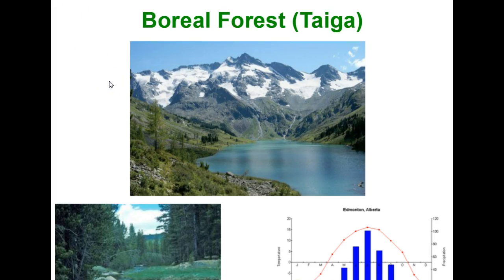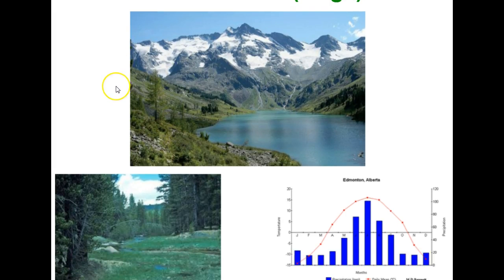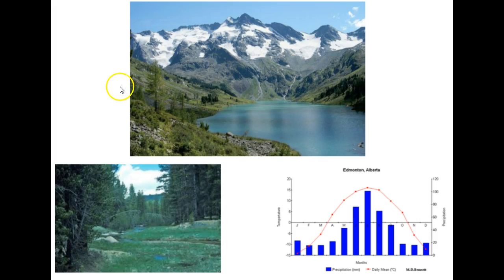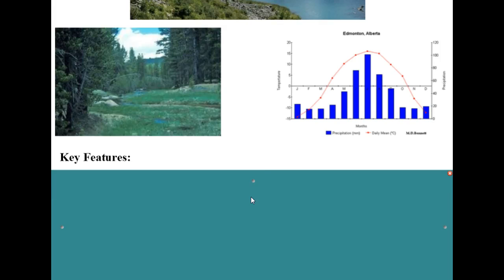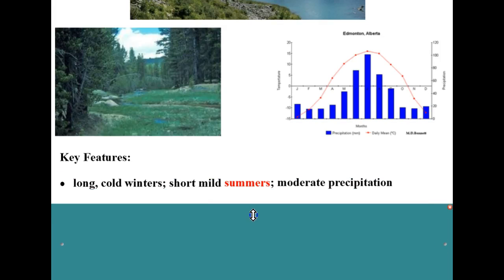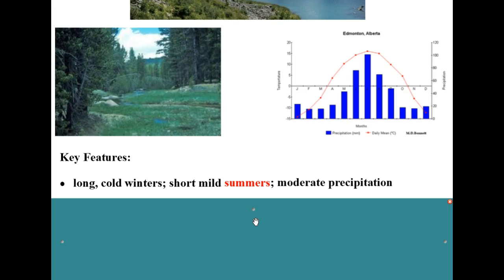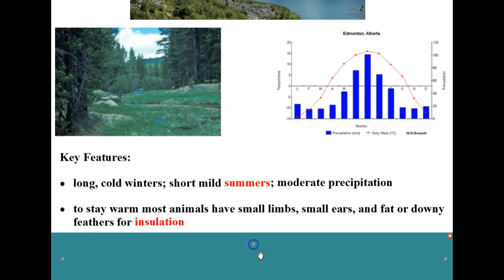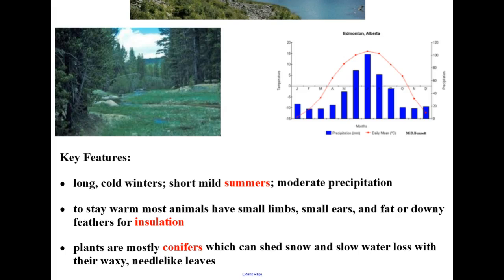Next is the boreal forest, also known as taiga — areas like Alaska. Key features are long cold winters, short mild summers, and moderate precipitation. To stay warm, most animals have small limbs, small ears, and fat or downy feathers for insulation. The plants are mostly conifers because they can shed snow more easily and slow water loss with their waxy needle-like leaves.